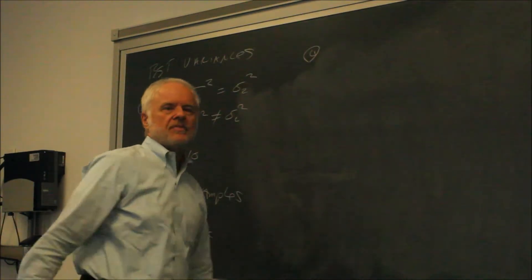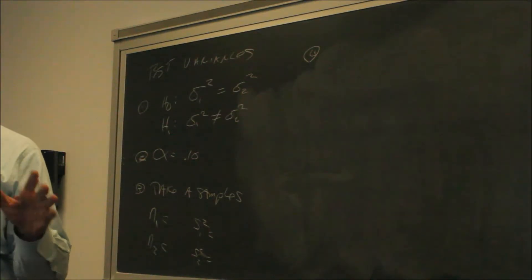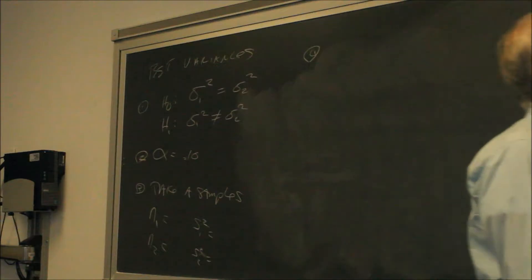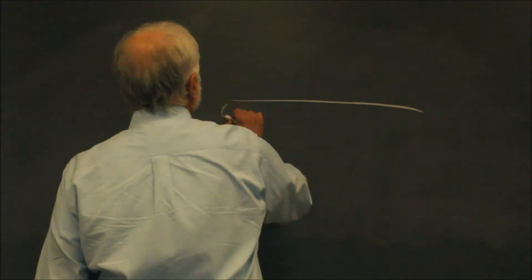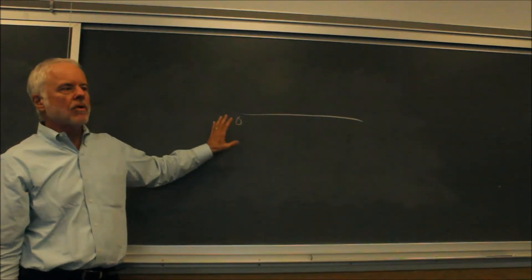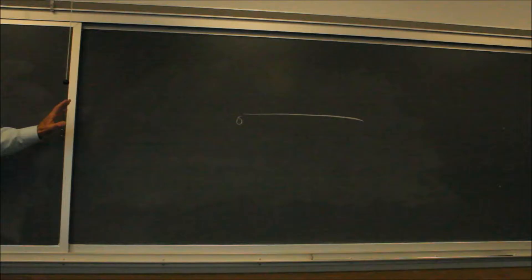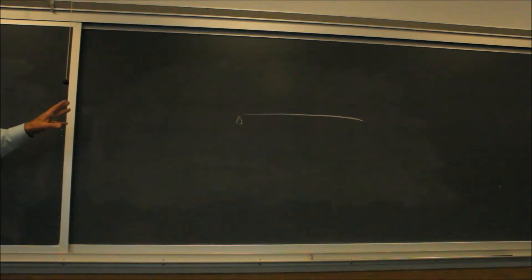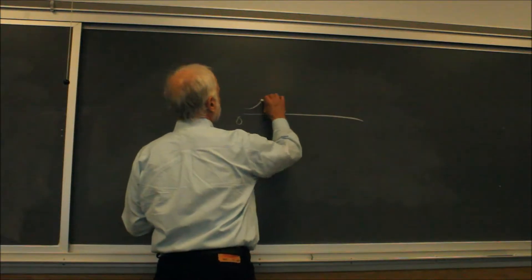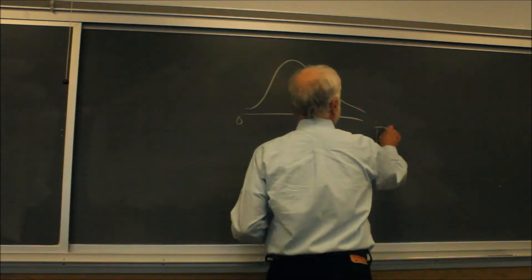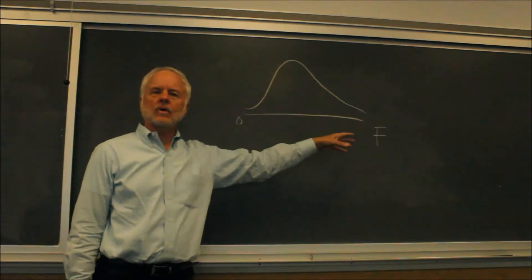One of the bigger differences in testing variances is that you don't have a Z or T distribution — you have what they call an F distribution. An F distribution starts at zero. Why zero? Because you're dealing with positive numbers — we're testing variances, and all squared terms are positive. Since there's a constraint at zero, meaning it can't go below zero, this distribution is not going to be normal. It's going to be skewed to the right. That's what an F distribution looks like — not exactly normal, skewed a little to the right, running from zero up.